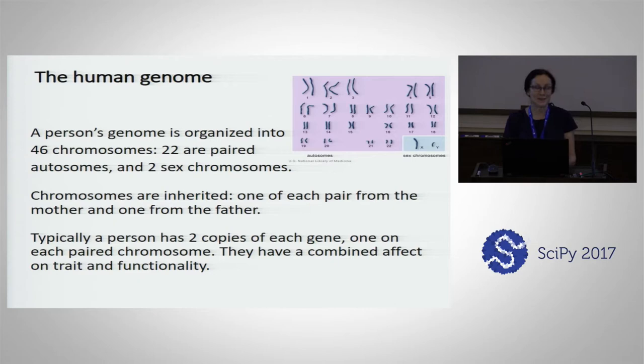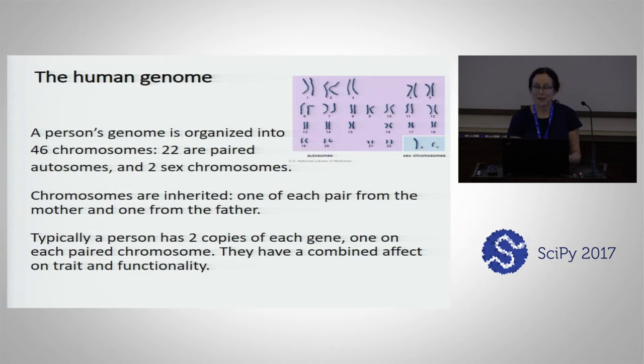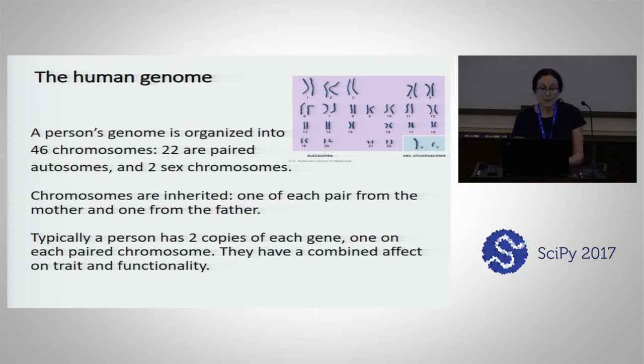Here's a graphic of your chromosomes. You have 46 chromosomes — 22 are paired and look very similar, and then there are the two sex chromosomes that may or may not be the same. Females have two Xs, males have XY, which look different. Chromosomes are inherited: one of each pair is inherited from the father and one from the mother. Typically a person has two copies of each gene, one on each of the paired chromosomes, and they work together to produce a trait or functionality.